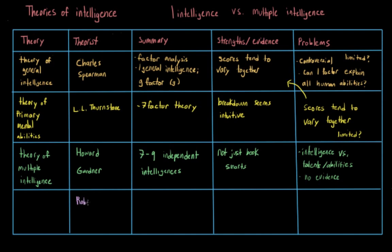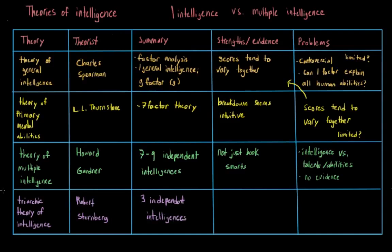The last theory I want to talk about was put forth by Robert Sternberg — that's the triarchic theory of intelligence. Sternberg agreed with Gardner about the existence of multiple intelligences, but said there were three of them, not seven, eight, or nine. He restricted his definition of intelligence to things he thought would lead to real-world success, including analytical intelligence or problem-solving ability, creative intelligence, and practical intelligence. A benefit was that we can reliably measure things along these lines, because it's fairly easy to define and therefore easy to test. However, research has shown that individuals who score highly on one of these three intelligences tend to score highly on the others as well.